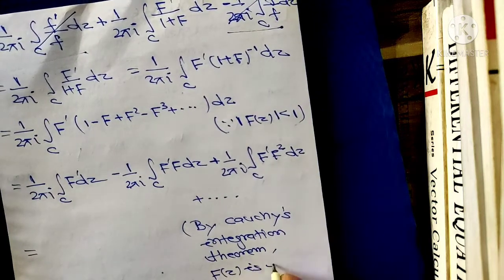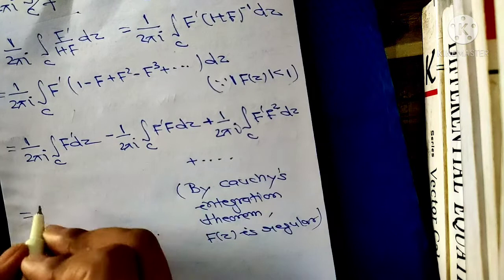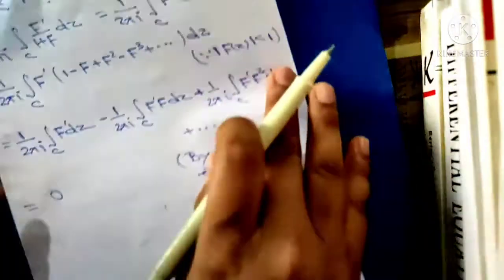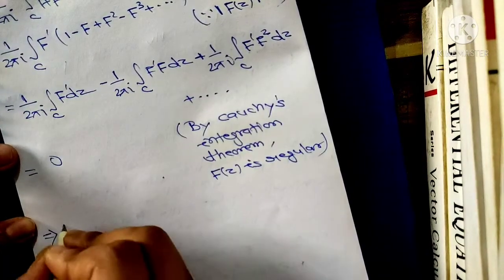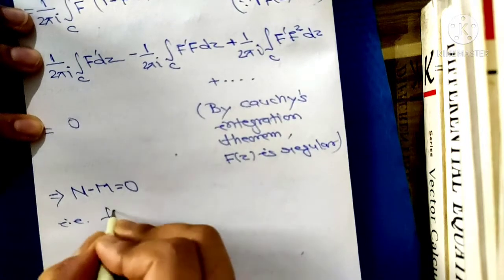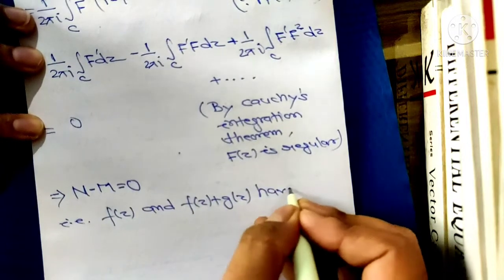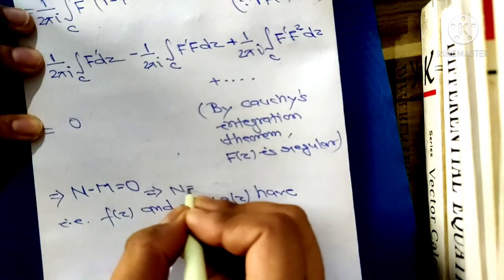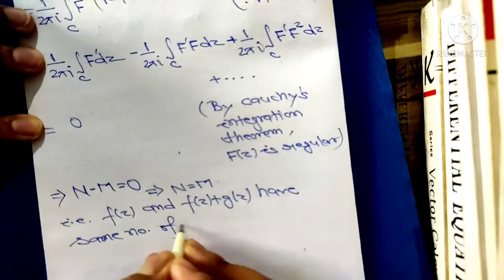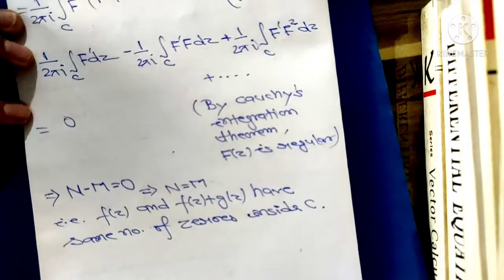By Cauchy's integration theorem, since F(z) is regular (analytic) inside and on C, each of these integrals vanishes. Therefore the entire expression equals zero, so N minus M equals zero, that is N equals M. This means f(z) and f(z) plus g(z) have the same number of zeros inside C.